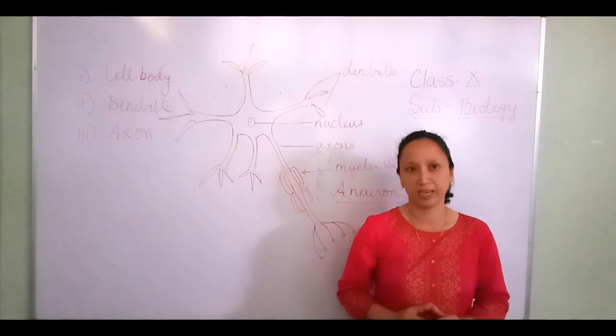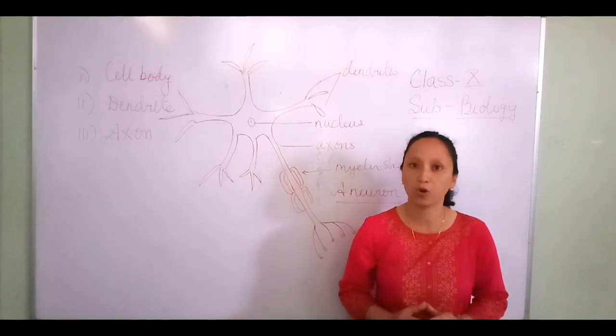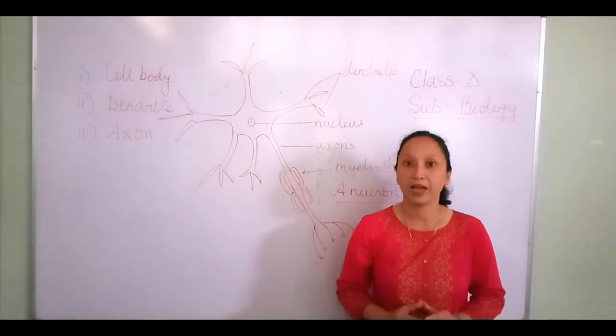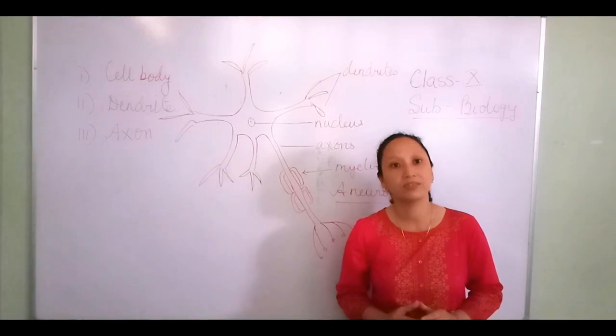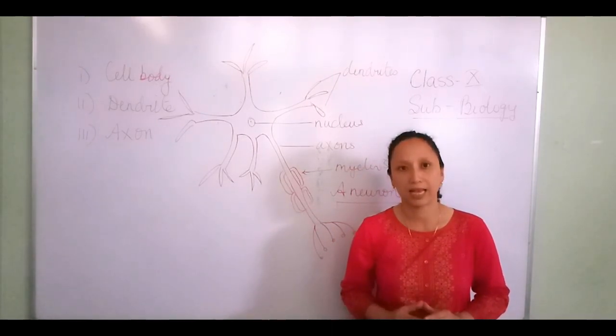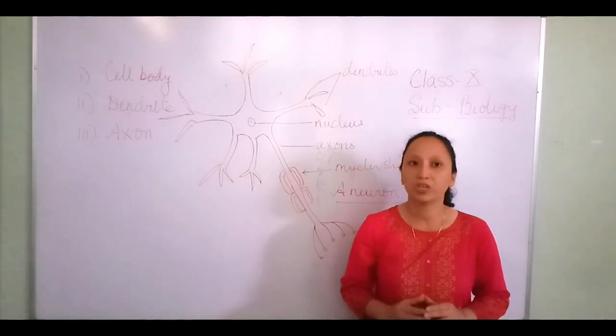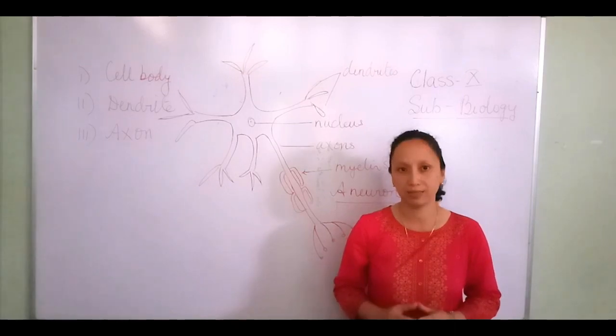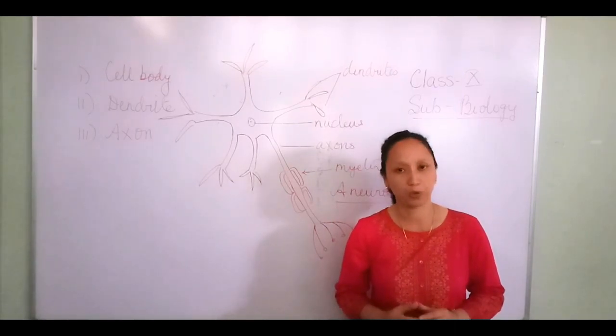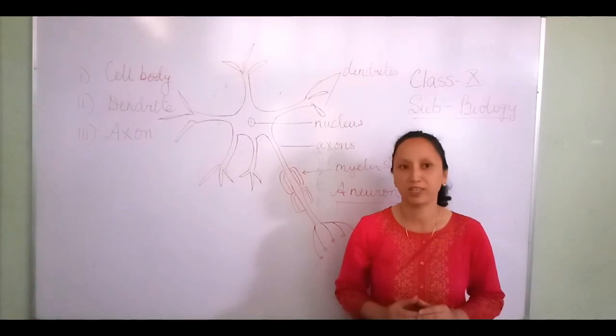The nervous system is composed of specialized cells called neurons, also known as nerve cells. These neurons produce electrical signals called nerve impulses and chemical substances called neurotransmitters.